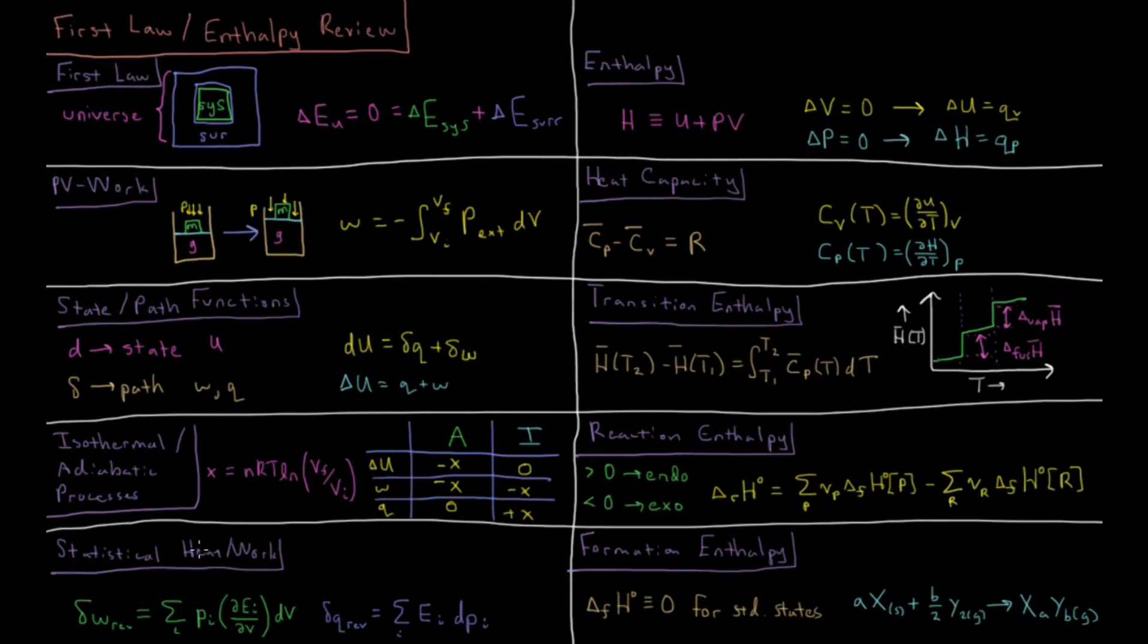We can look at heat and work in terms of statistical mechanics and our partition functions. The change in work done in a reversible process is the sum over all the states of their probabilities times how their energy levels change as we do whatever work we do. For heat, it's the sum of the energy levels times the change in their probabilities as the work occurs. So work involves the change in the energy levels, whereas heat involves the change in their probabilities.